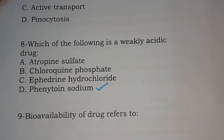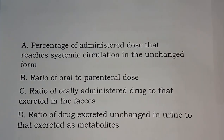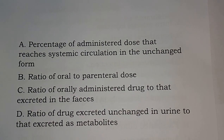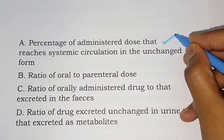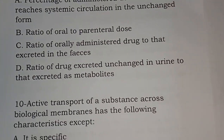Question number nine: bioavailability of a drug refers to — options are: percentage of the administered dose that reaches systemic circulation in the unchanged form; ratio of oral to parenteral dose; ratio of orally administered drug to that excreted in the feces; ratio of drug excreted unchanged in urine to that excreted as metabolite. The correct answer is option A: percentage of the administered dose that reaches systemic circulation in the unchanged form. That is bioavailability.